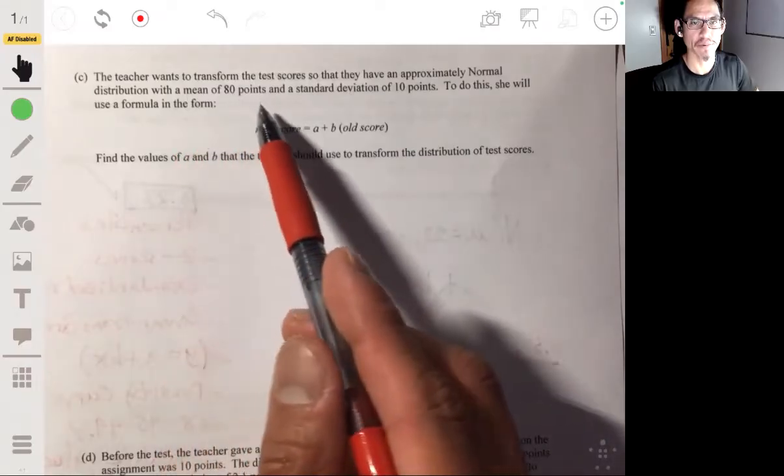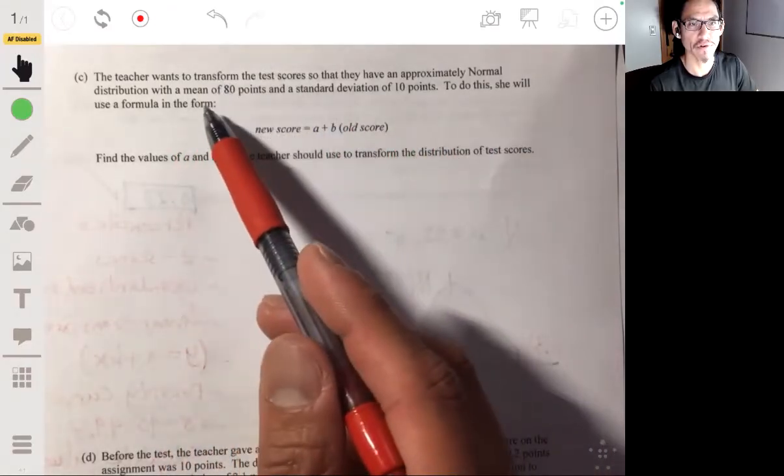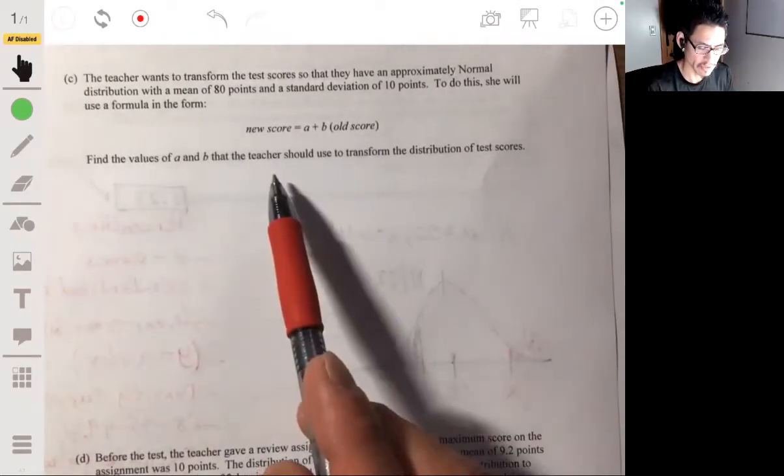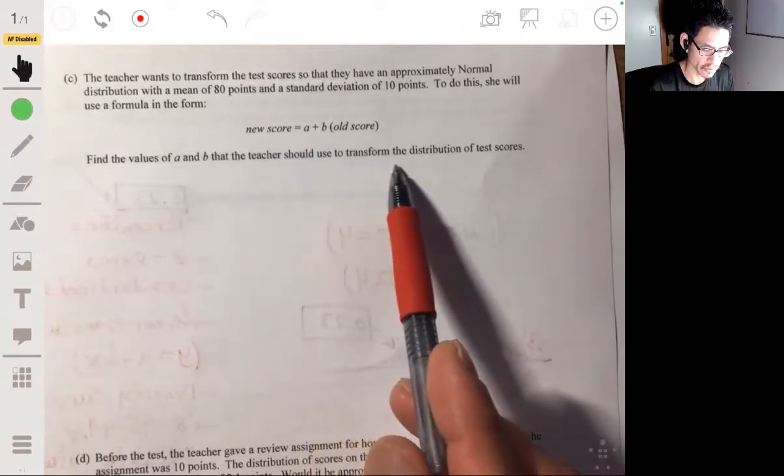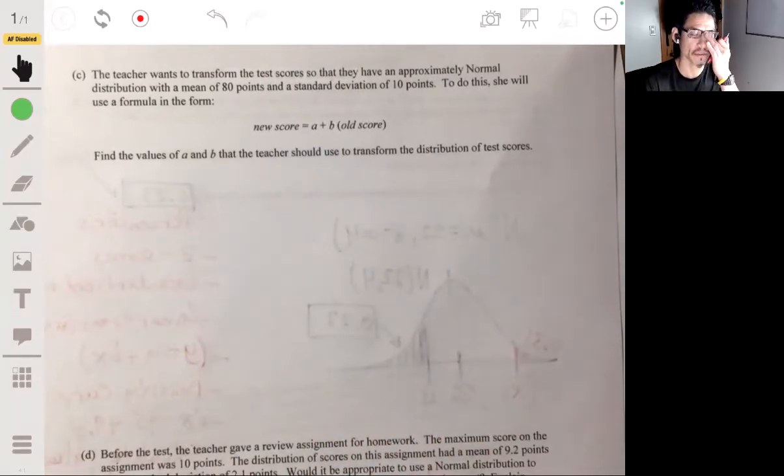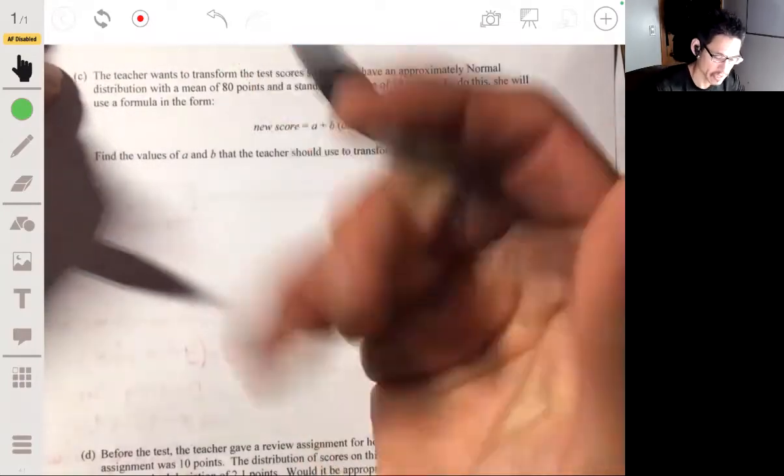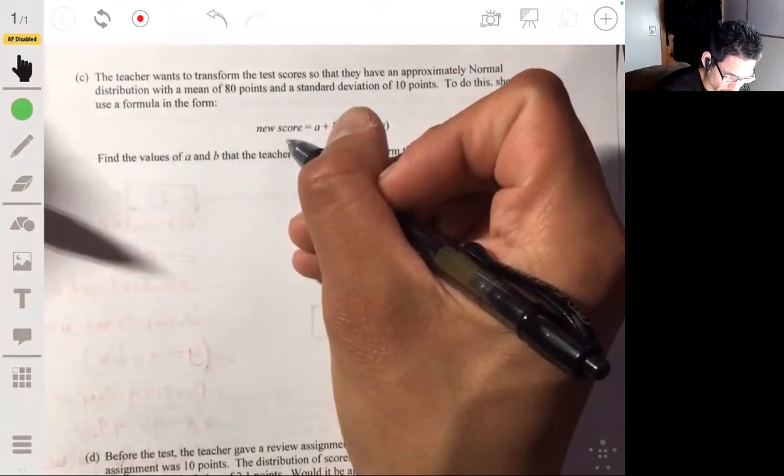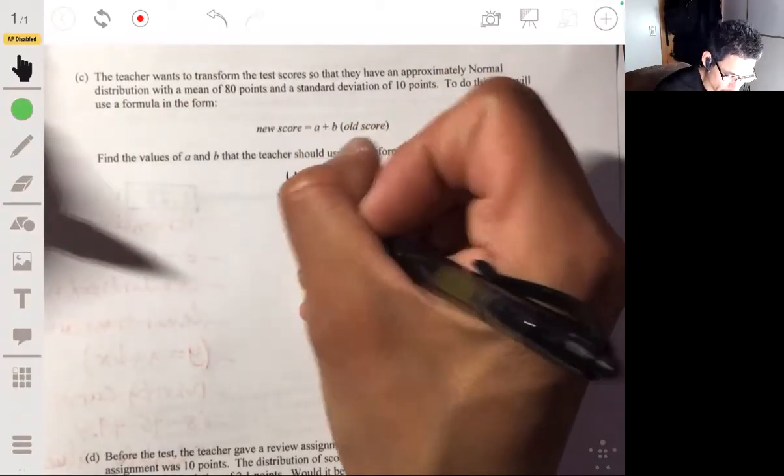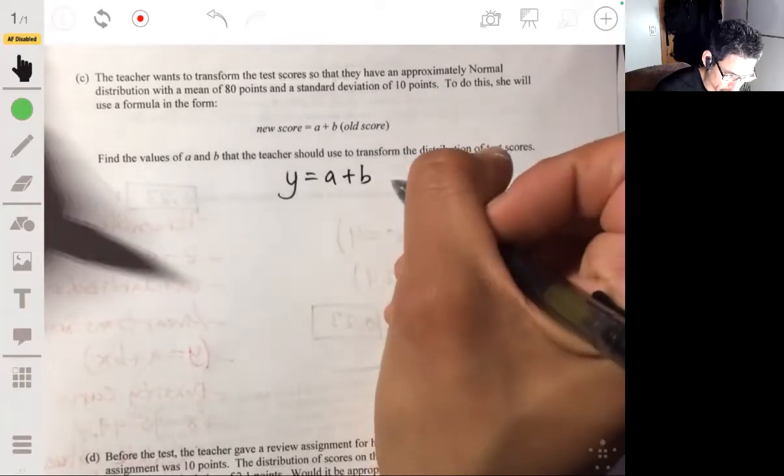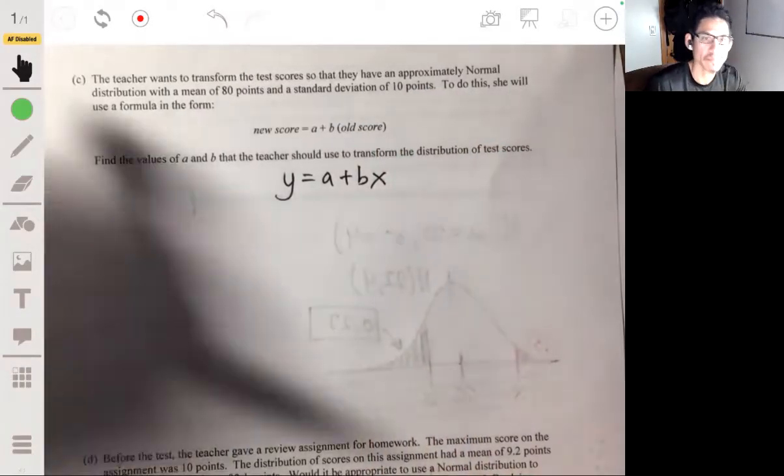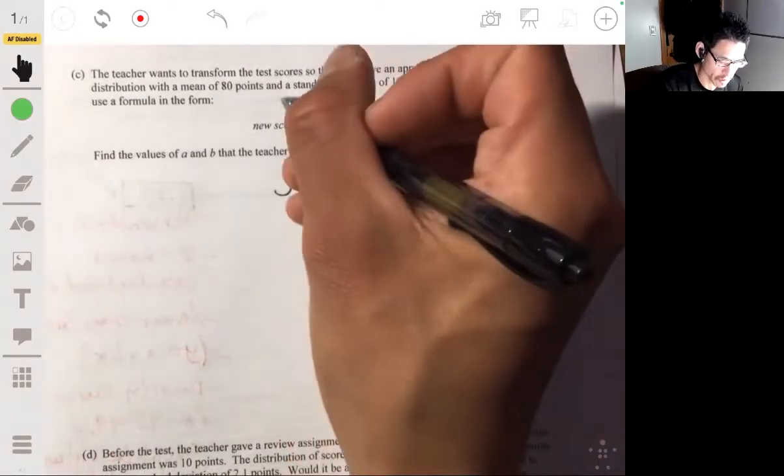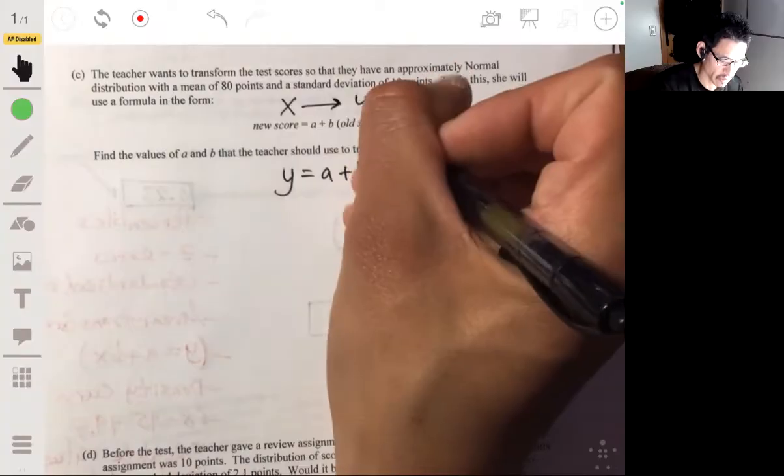Part C: The teacher wants to transform the test scores so that they have an approximately normal distribution with a mean of 80 points and a standard deviation of 10 points. To do this she will use a formula in the form: new score equals a plus b times old score. Find the values of a and b. So you can see this is a linear transformation. We're going to have our new score be y, so y equals a plus bx, and our old scores will be x. So we're changing our original x scores to y values.